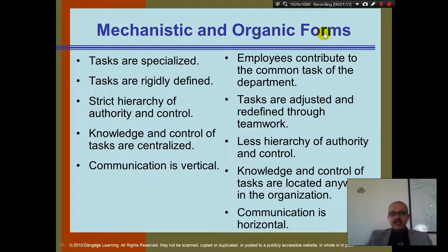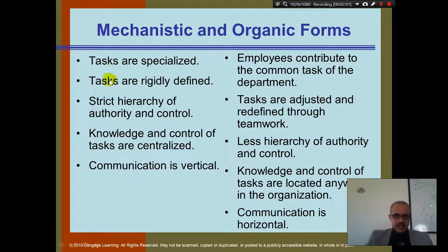Looking at mechanistic and organic forms: in a mechanistic structure, tasks are specialized and rigidly defined, there is a strict hierarchy, knowledge and control are very centralized, and communication is very vertical.